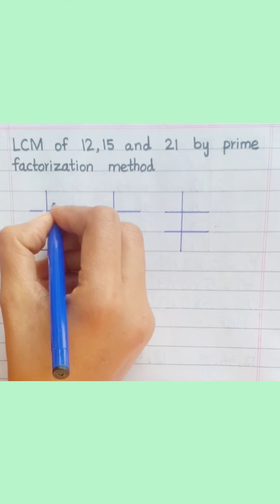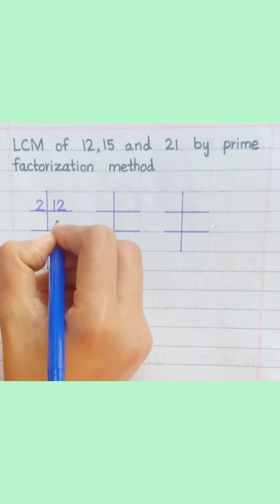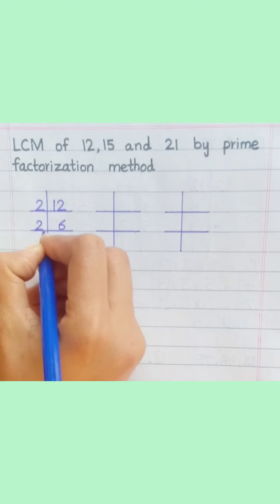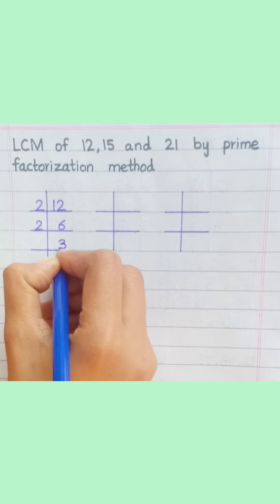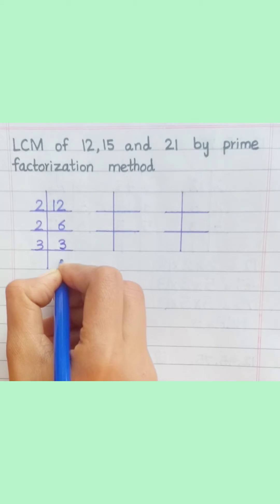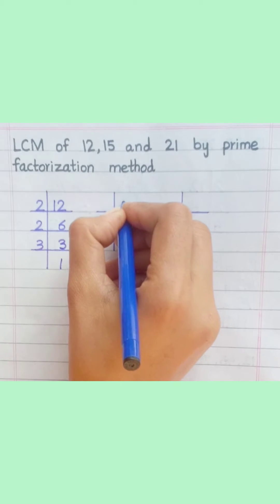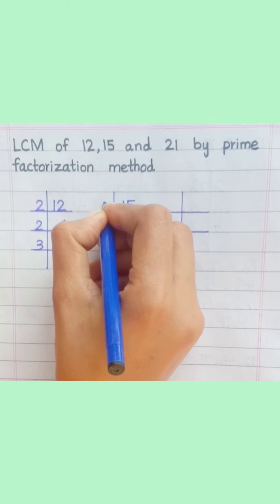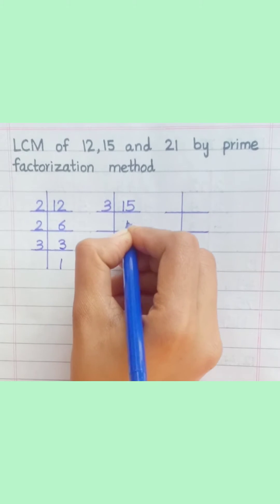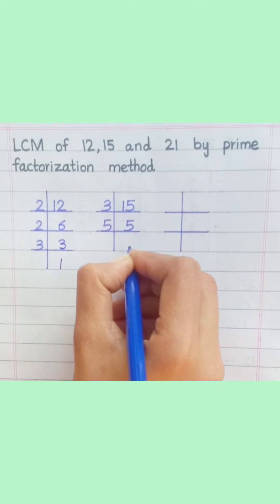12: 2 sixes are 12, 2 threes are 6, 3 ones are 3. So 12 = 2 × 2 × 3. 15: 3 fives are 15, 5 ones are 5. So 15 = 3 × 5.